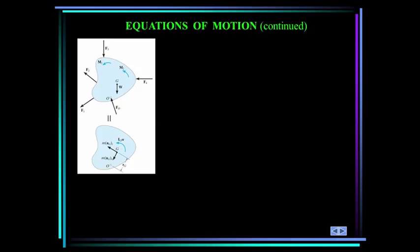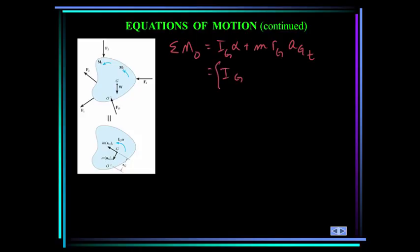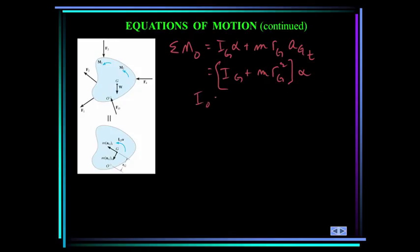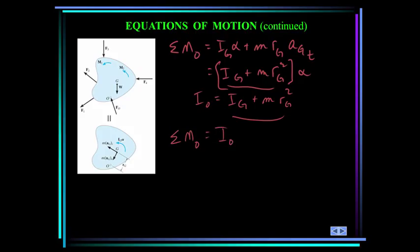The summation of moments about the mass center may be replaced by a moment summation about any arbitrary point. Summing the moment about the center of rotation yields I_G * alpha plus M * R_G * (tangential acceleration of mass center), which can be rewritten as (I_G + M * R_G²) * alpha. From the parallel axis theorem, the mass moment of inertia about point O equals I_G + M * R_G². Therefore, the summation of moments about O equals I_O * alpha.